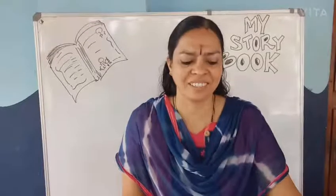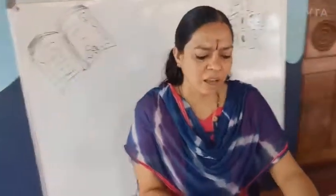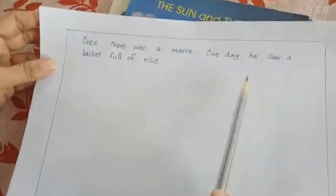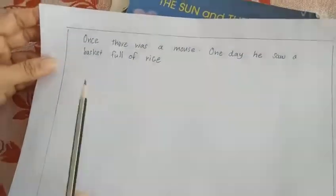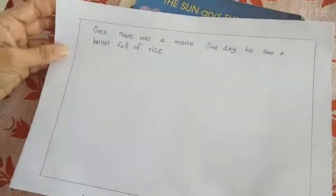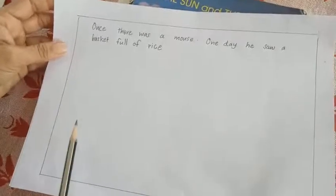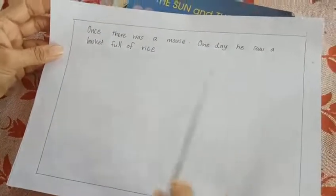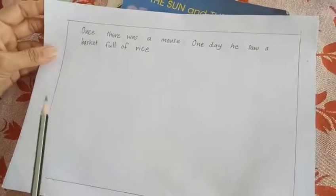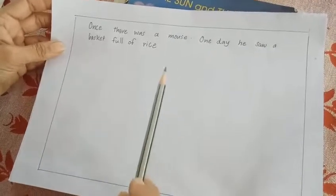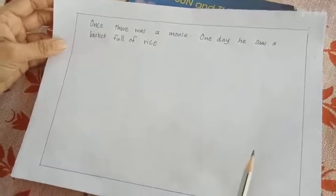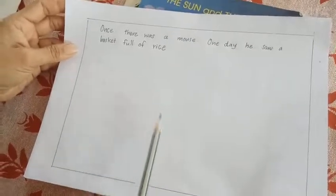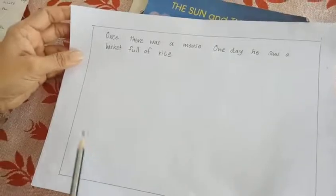Look at these pages: 'Once there was a mouse. One day he saw a basket full of rice.' Here we have to draw the picture — the picture of a mouse and a basket full of rice.